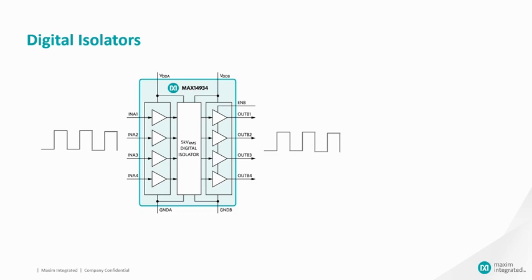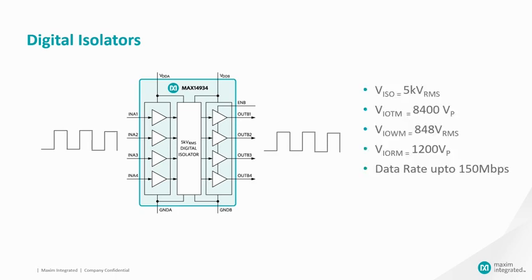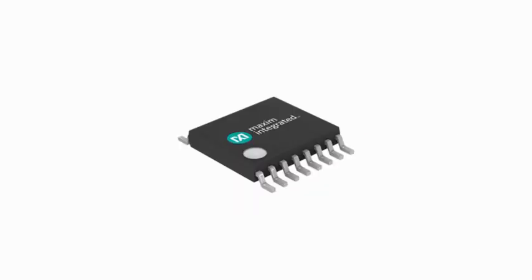Isolation is a means of preventing conduction between two parts of a system while still allowing signal transfer between those two parts. Isolation protects circuits from high common mode transients, faults, and eliminates ground loops. The digital isolator MAX14934 can withstand isolation voltage up to 5kV RMS for 60 seconds and a maximum transient isolation voltage of 8400V peak. It can continuously withstand 848V RMS and a repetitive peak voltage of 1200V. The MAX14934 operates at a maximum speed of 150 Mbps. In this video, we went through the basics of level translators. For more information, stay tuned to maxim-ic.com. Thank you.